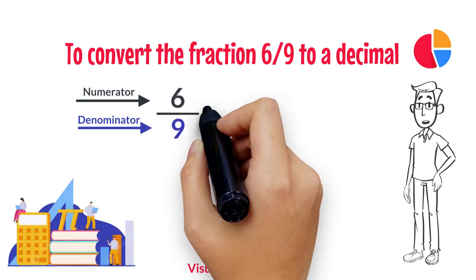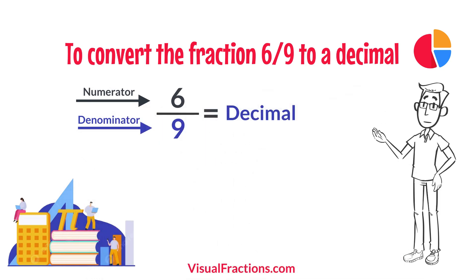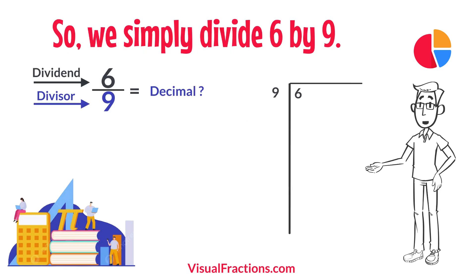In this case, we want to convert 6 ninths to a decimal. So, we simply divide 6 by 9. To do this by hand using long division, we start by writing 6 as the dividend and 9 as the divisor.